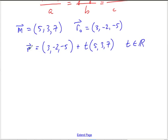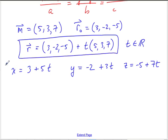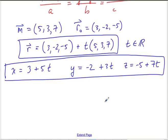And then from there, our parametric equations come quite naturally. The x-coordinate of my position vector is going to be 3 plus 5t. The y-coordinate is going to be negative 2 plus 3t. And the z-coordinate is going to be negative 5 plus 7t. And so now we have both a vector equation and the parametric equations. And I got both of those from the symmetric.